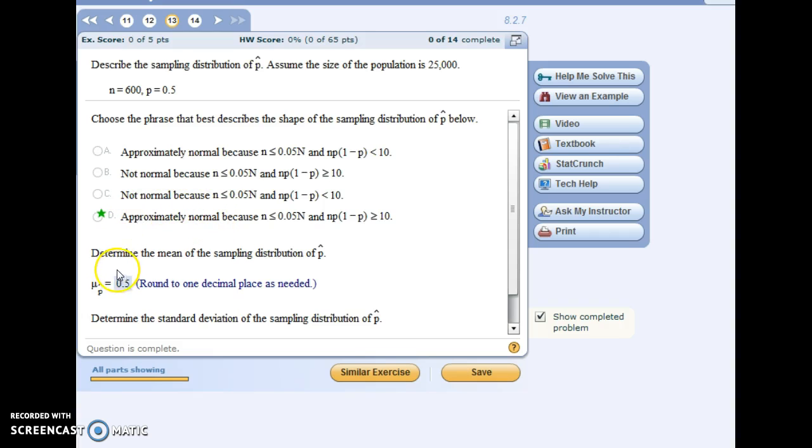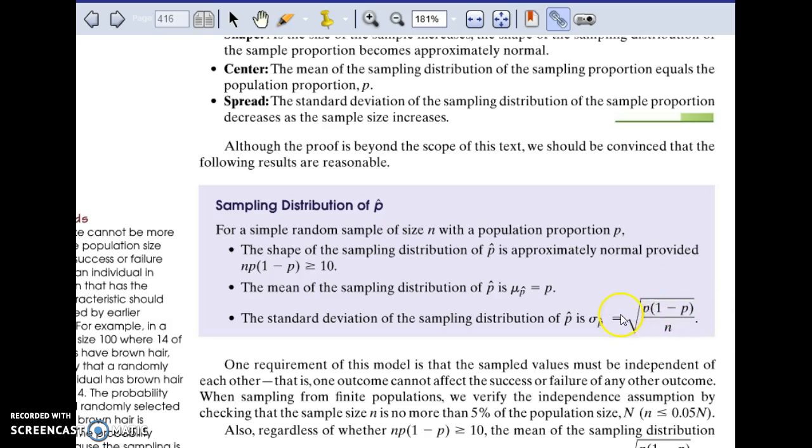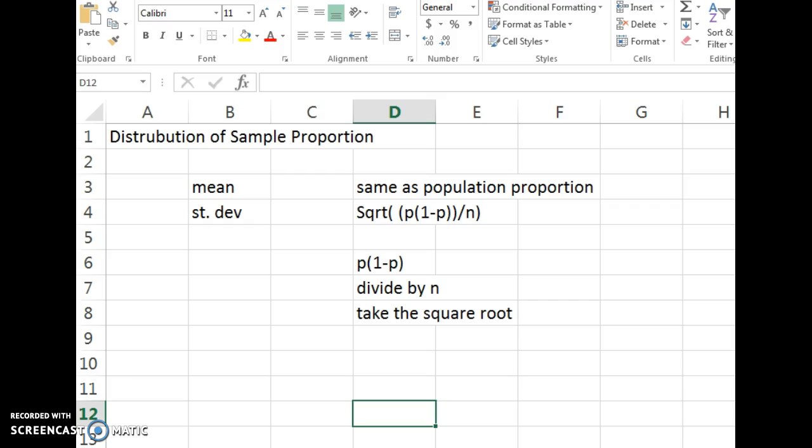And then for the next part, we're determining the mean of the sampling distribution of p-hat, our sample proportion. And this is a value you can take directly from the proportion for the entire population. So similarly to when we were looking at the sampling distribution of the sample means x-bar in the previous problems, you get that value, the mean here of your sample proportion, directly from the population values. And then the formula for standard deviation is a little more complex. Again, it's on page 416. And I'll work that out in Excel. For the mean, we got 0.5 directly.